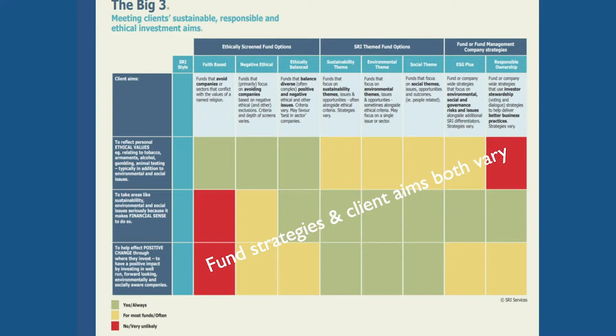This next slide covers two main areas. It looks at client motivations and maps those across the different strategies available to retail investors today. To categorise the different strategies, I've devised a system called SRI Styles, which breaks down into three main groups. The ethical funds people are most familiar with are those that focus on avoidance — I refer to these as negative ethical funds because their core strategy is about excluding different areas like armaments and tobacco.